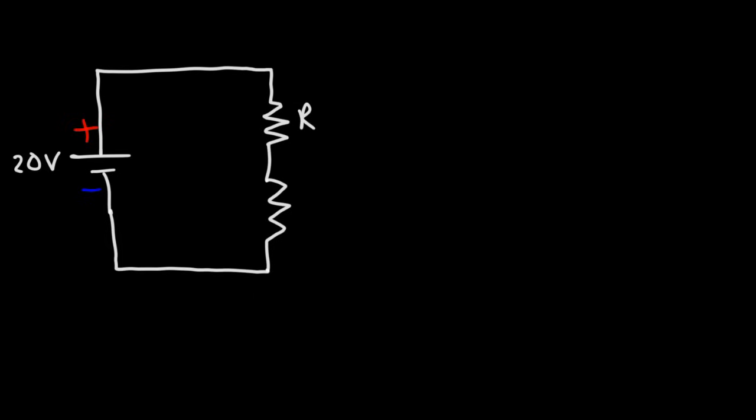This is the positive terminal of the battery and here we have the negative terminal. We're going to use a 20 volt battery. This is going to be R1 and this is going to be R2. Let's give R1 a value of 2 ohms and R2 is going to be 3 ohms. What is the voltage drop across R1 and what is the voltage drop across R2?